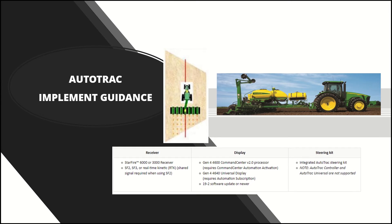And lastly, auto track implement guidance. As you can see in the picture, the machine is actually able to drive off the line if necessary so that it can keep that implement centered right where it needs to be on the line. Most applications for this would be planting, where it's not as important if you go off the guidance line on your first pass because there's nothing there yet. So if you don't need to plant on ridges or you're not worried about running anything over, then this is definitely the option for you.